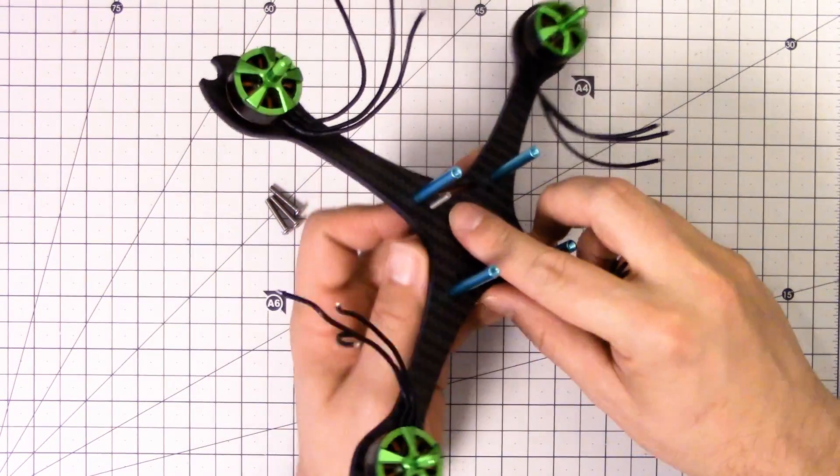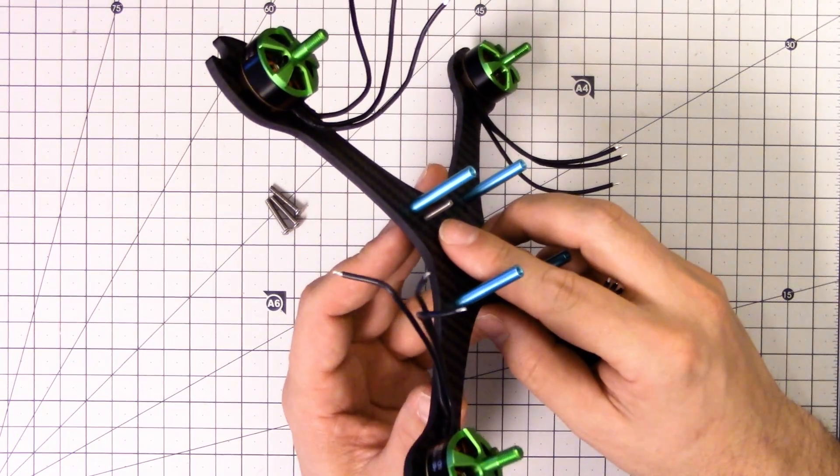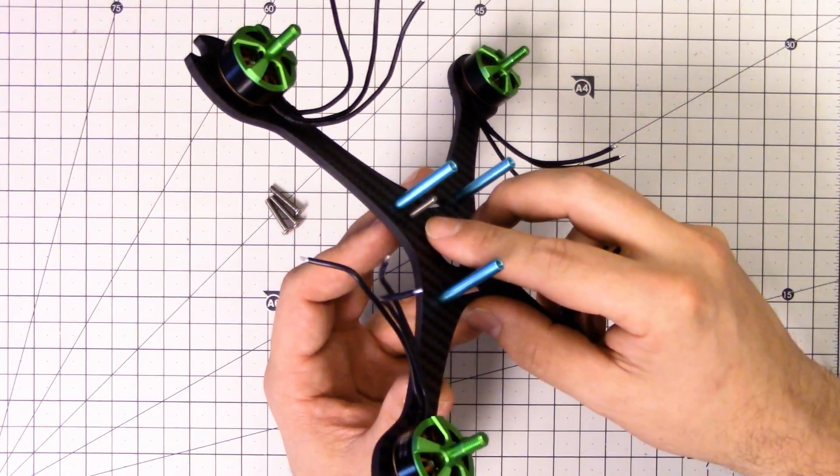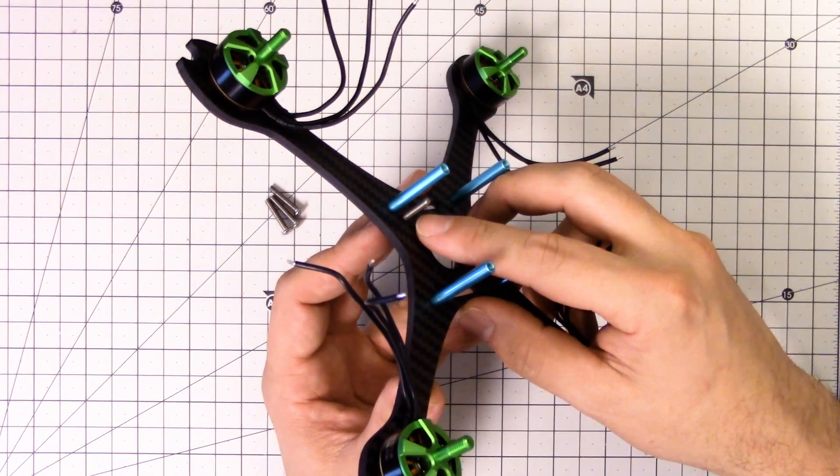There's some debate as to whether metal screws or nylon screws are better to use here. The advantage of nylon screws is that they don't transmit shock to the boards as readily. The advantage of steel screws is that they're stronger and they don't shear off.